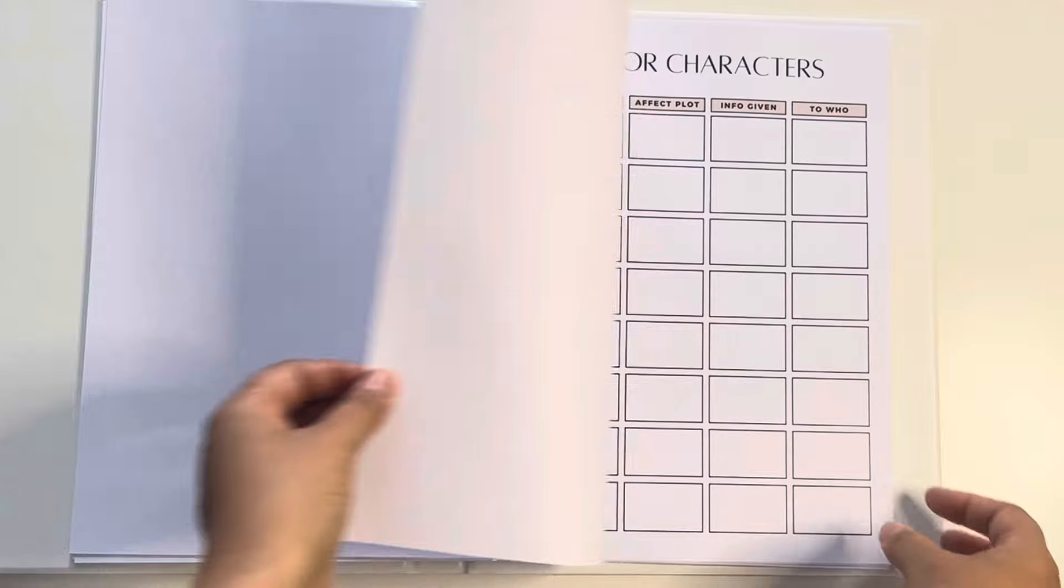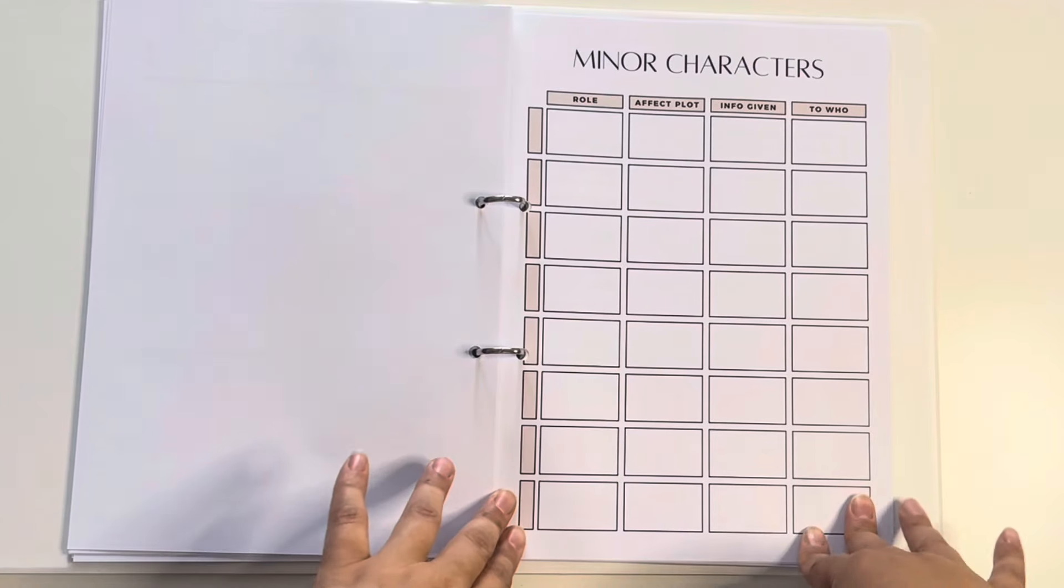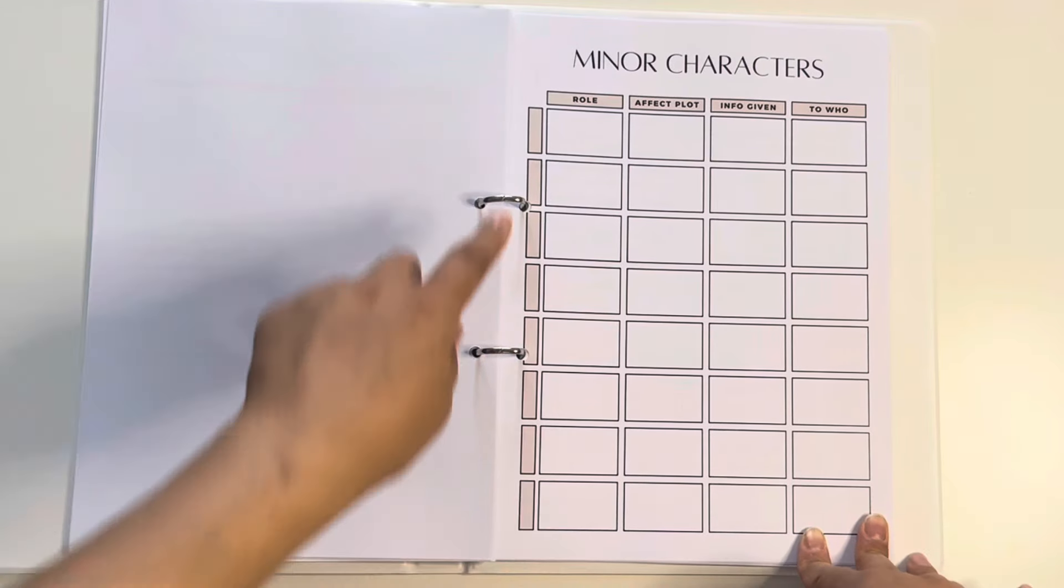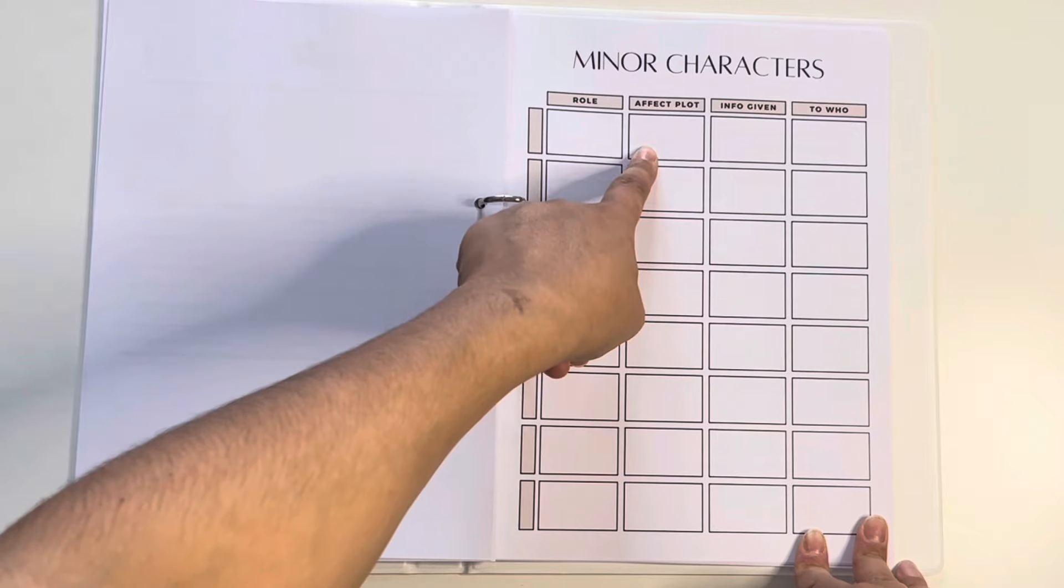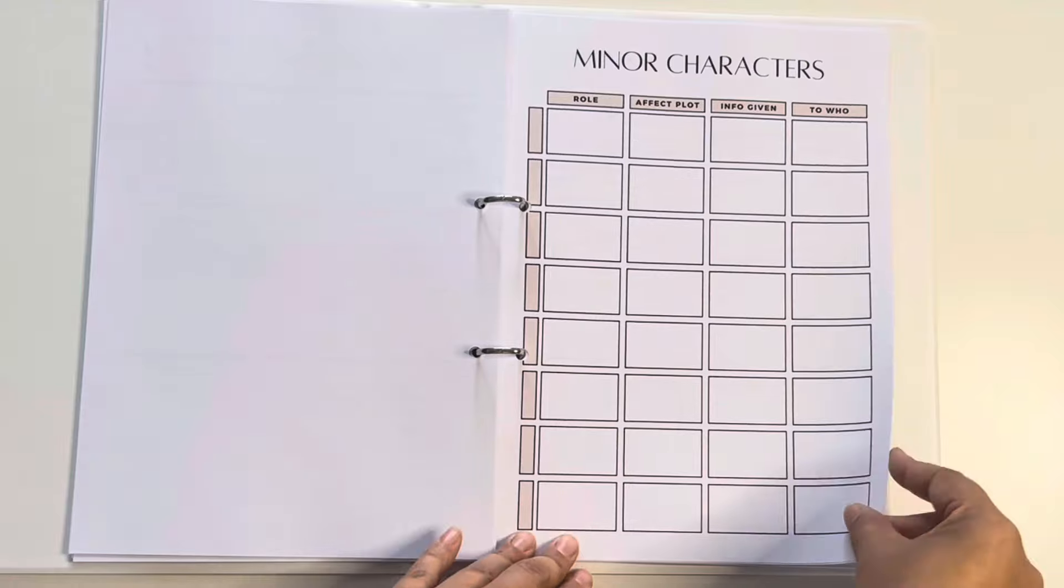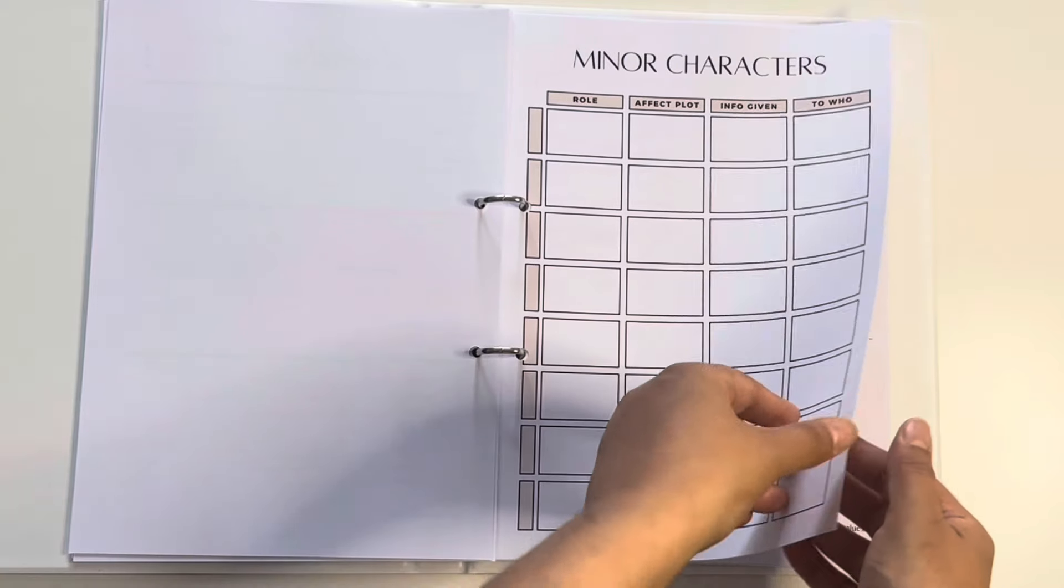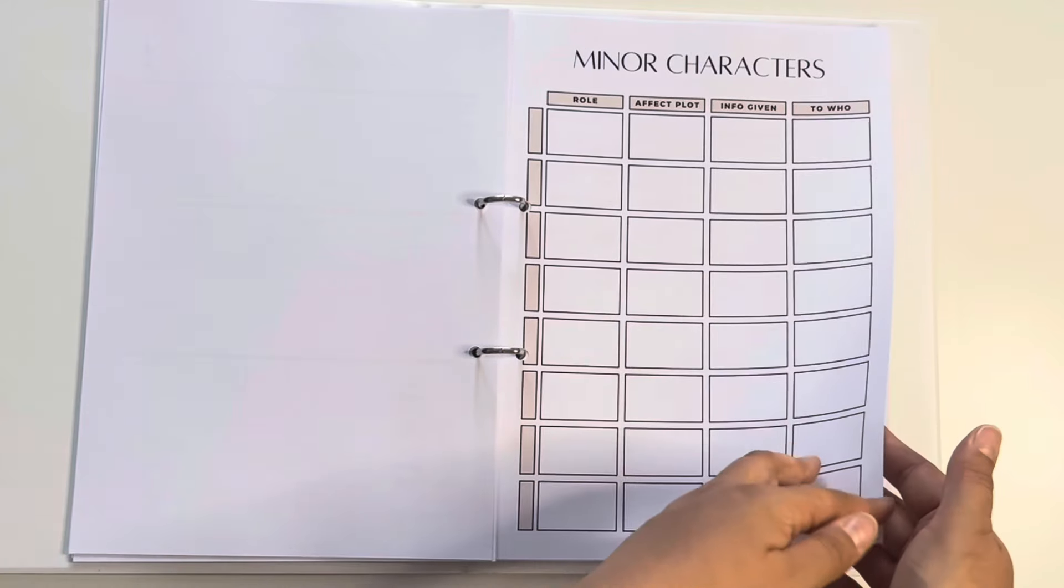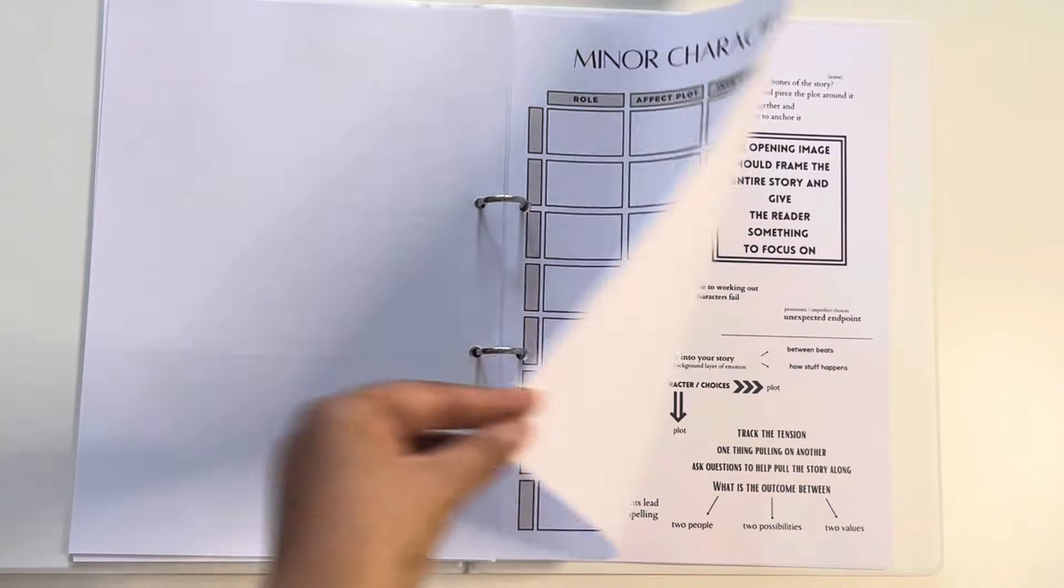Then a few little other things, keeping track of all the minor characters I have, the role that they play, how they affect the plot, if they give any information and who they give the information to. Again, just so I can keep track of my minor characters and their names in case I need to refer back to them without having to scroll through my entire novel.